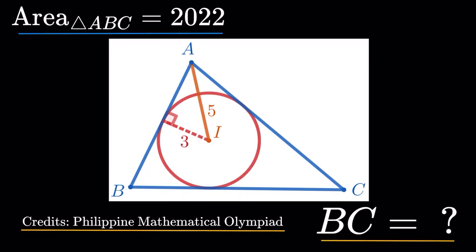So the red circle you see, it's the incircle of triangle ABC. So we have AI to be 5, and then the radius of the incircle, or the inradius, is 3. And we're asked to find the length of BC. So credits to the Philippine Mathematical Olympiad for this item.